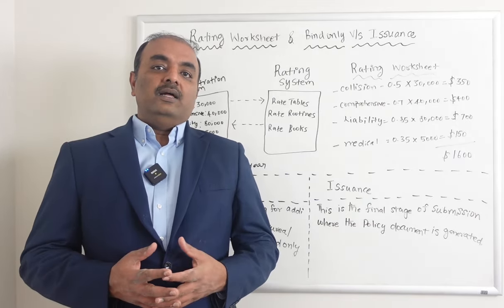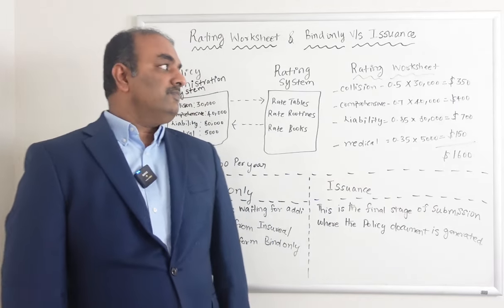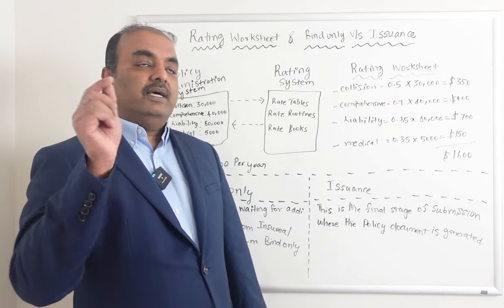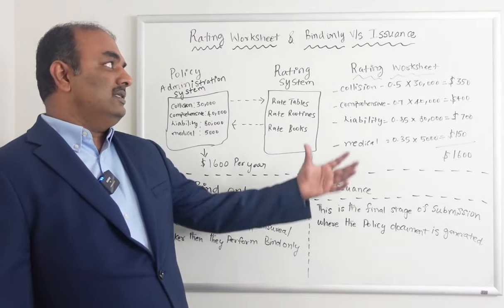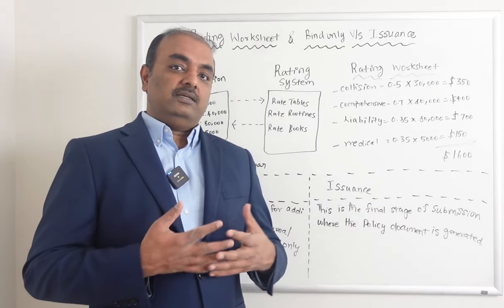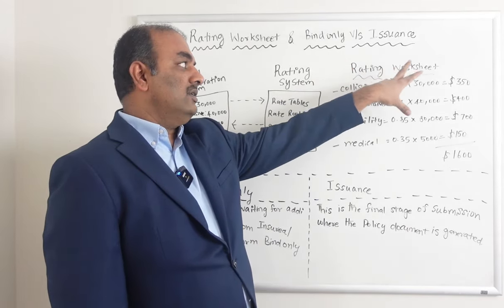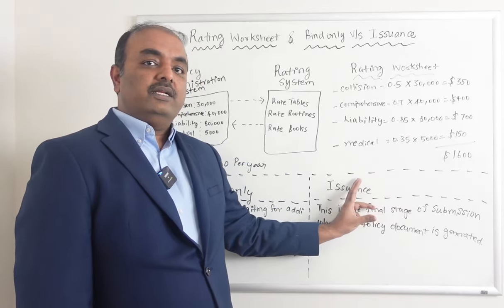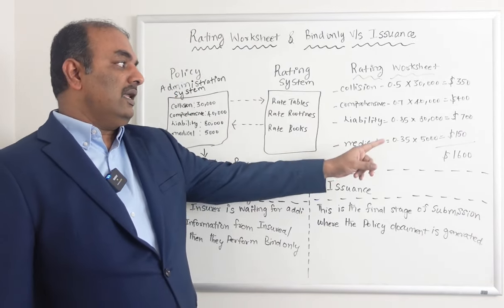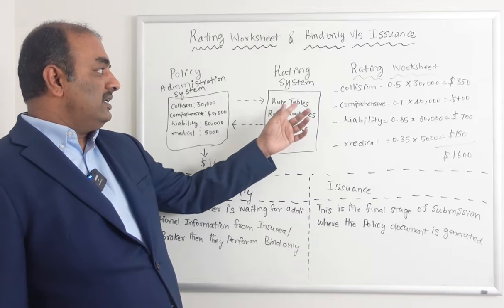So that is the intention of the rating worksheet — it is a detailed document that has step-by-step procedures which resulted in this premium. And in case the underwriter wants, for collision instead of 0.5, let me make it 0.6 — they can overwrite the factor and recalculate the premium. Also, if there is an audit from the department of insurance or statistical teams wanting to understand how you came up with this premium and whether you overcharged the customer, they can show this rating worksheet, which will have detailed information for the audit team. It contains the details of the procedures used to calculate the premium with rates, factors, attributes, rate tables, and rate routines information.